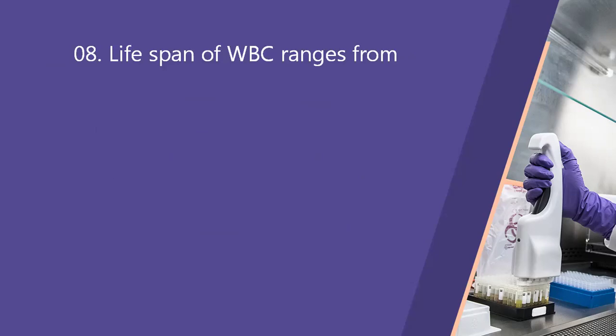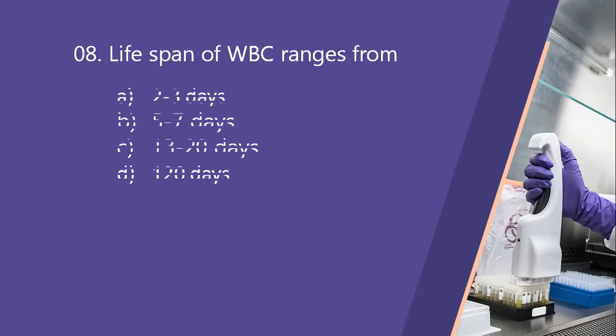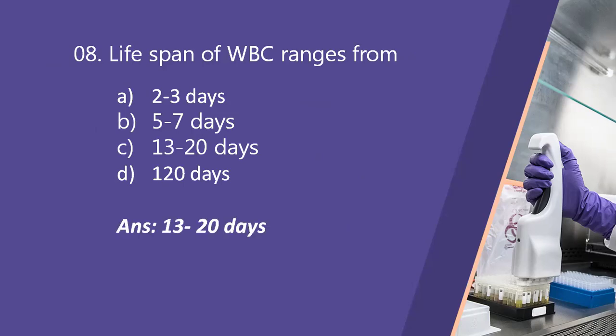Next question: life span of WBC ranges from? Option A, 2 to 3 days. Option B, 5 to 7 days. Option C, 13 to 20 days. Option D, 120 days. Here the right answer is option C, 13 to 20 days.